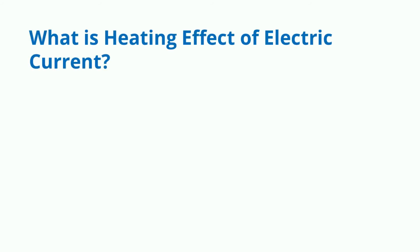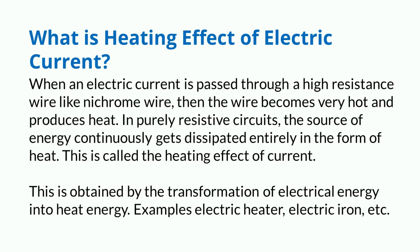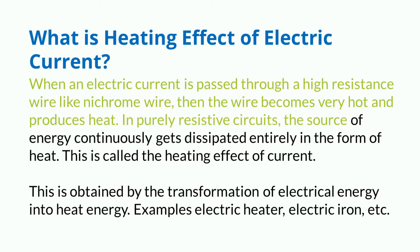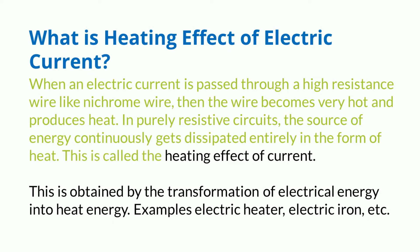What is the heating effect of electric current? When an electric current is passed through a high resistance wire like nichrome wire, the wire becomes very hot and produces heat. In purely resistive circuits, the source of energy continuously gets dissipated entirely in the form of heat. This is called the heating effect of current.